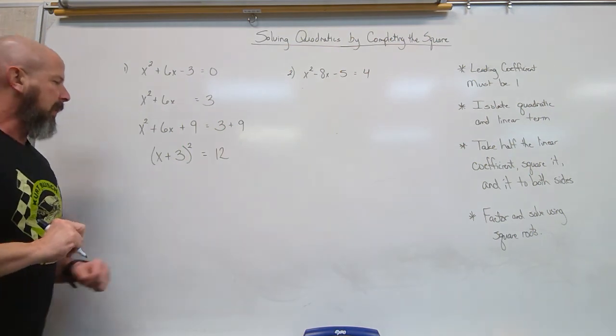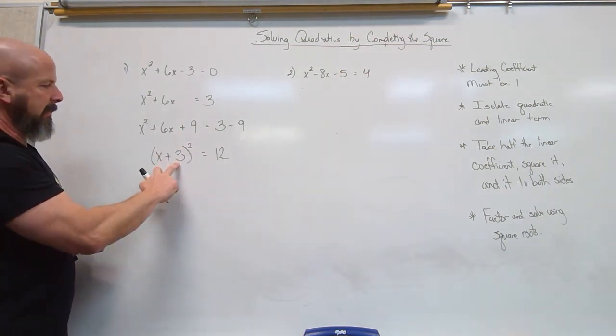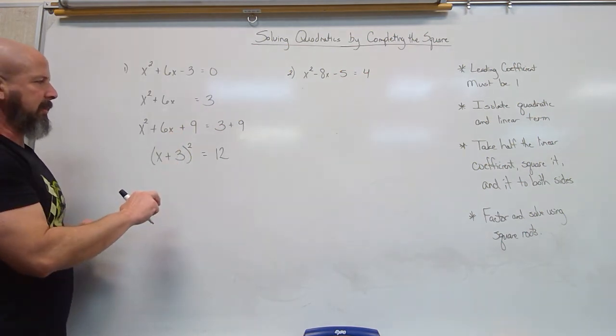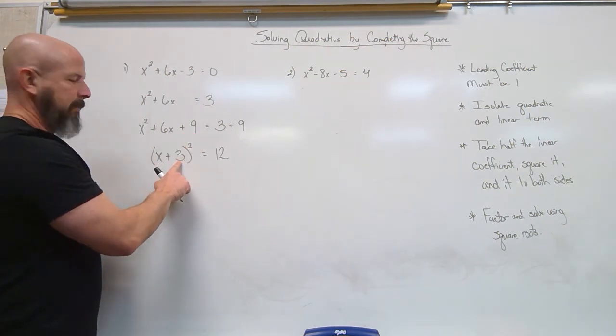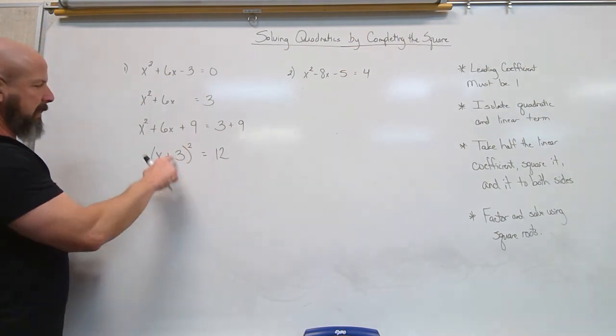And of course we get 12 on the right, but this is the key right here. That's a perfect square binomial. So this factors to x plus 3 squared. I can remember it was a 3 because that's where the 9 came from. Plus, because I had a plus.